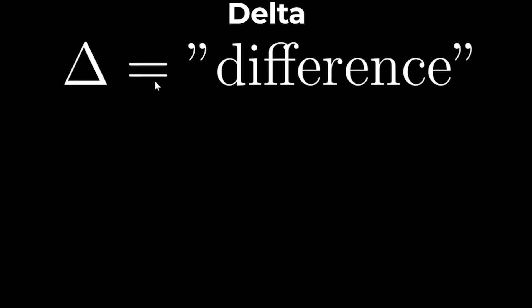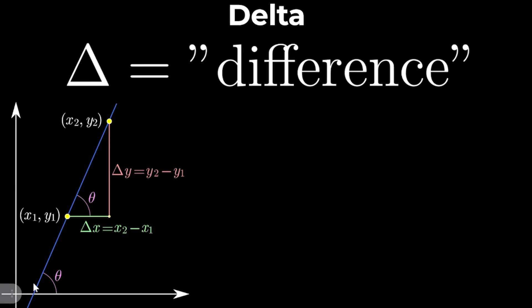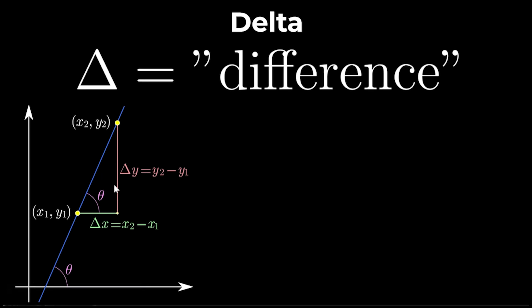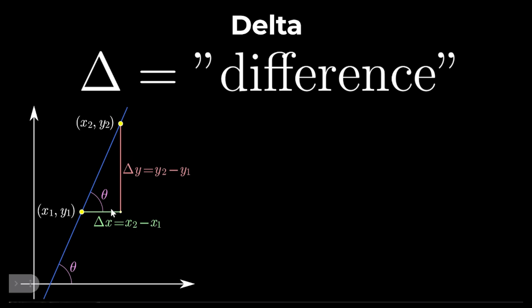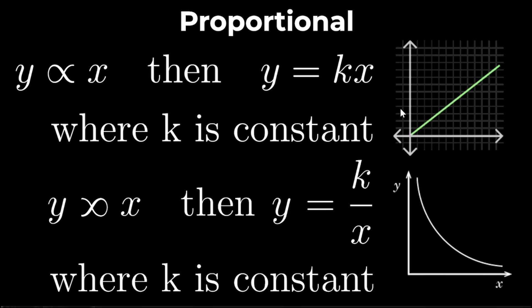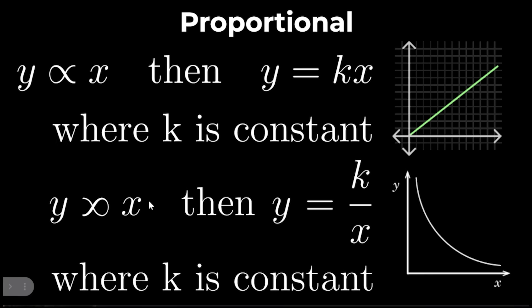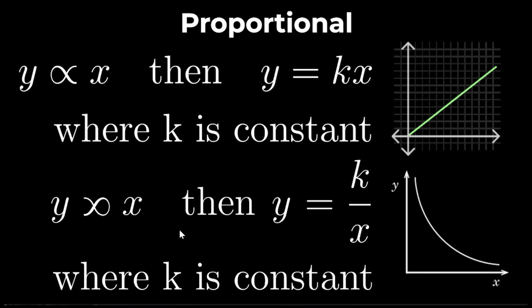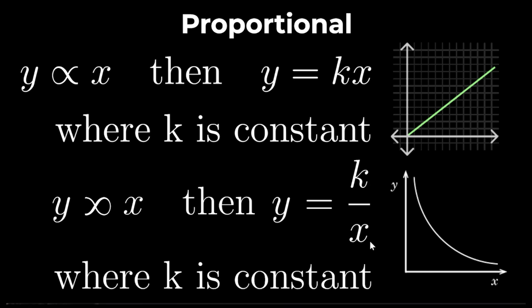Delta typically means difference. For example the gradient of a straight line is the difference between the two y coordinates over the difference between the two x coordinates, or delta y over delta x. Proportional: If y is proportional to x then y equals kx where k is a constant. Sometimes you might see a proportional sign flipped to indicate that y is inversely proportional or y equals k over x.